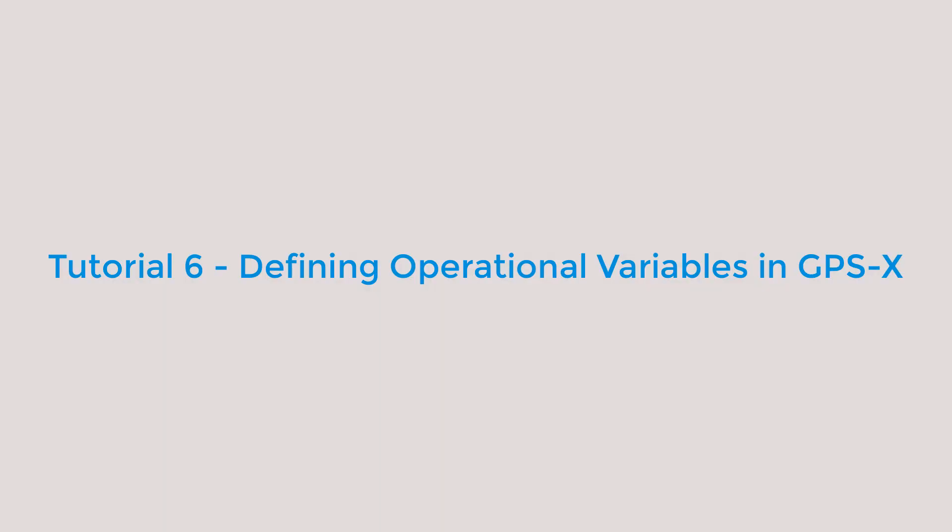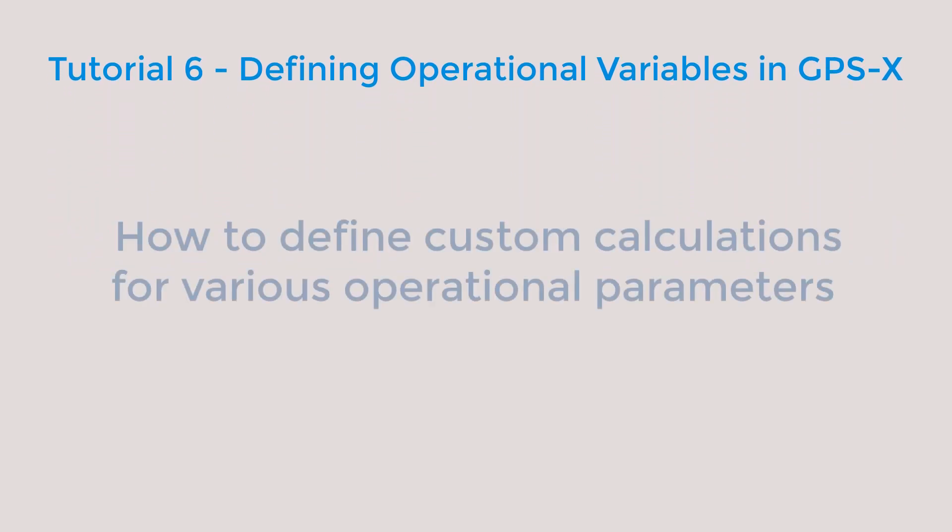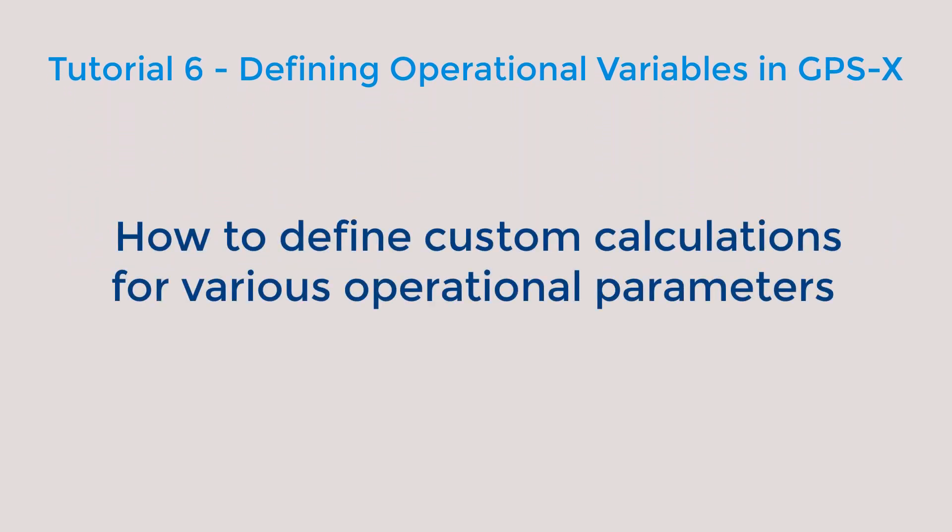Welcome to tutorial 6: defining operational variables in GPSX. It is suggested to complete tutorials 1 and 2 prior to getting started, so you can gain an understanding of how to create plant models and run simulations in GPSX. How some operational characteristics in a wastewater plant are defined may be site-specific and difficult to generalize. GPSX has a defined feature that allows a user to format the calculation for operational variables such as the food to microorganism ratio and the solids retention time. The goal of this tutorial is to show users how to define a custom calculation for specific operational variables.